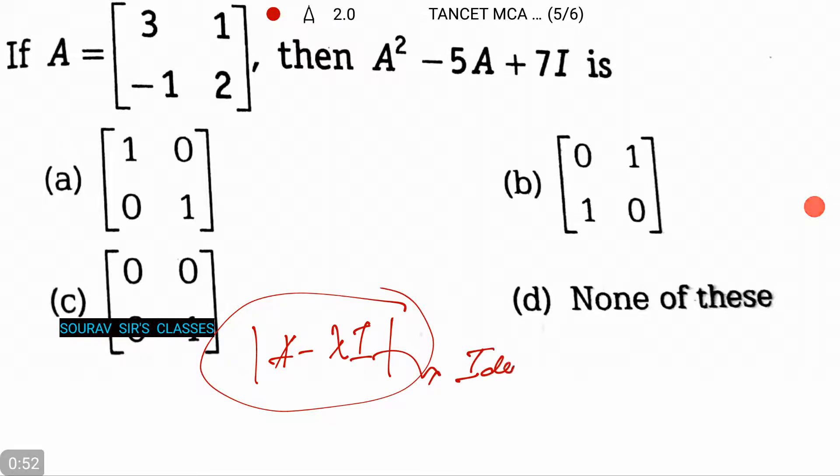Identity matrix. This expansion gives us an equation in λ which is called the characteristic equation.